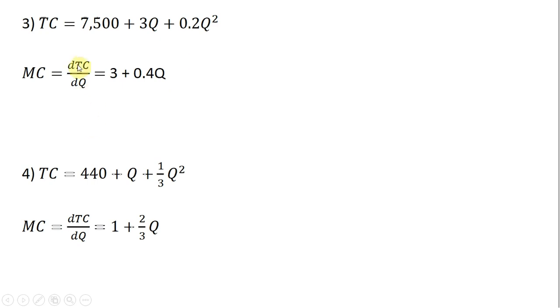Example three: A slightly more complicated, non-linear total cost function. Total cost equals 7,500 plus 3Q plus 0.2Q². Once again, to get marginal cost, we will take the derivative. The derivative of 7,500 is just zero. The derivative of a constant is zero, so it doesn't appear here. The derivative of 3Q is just 3.